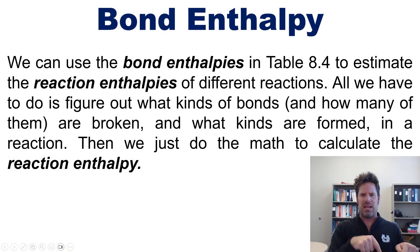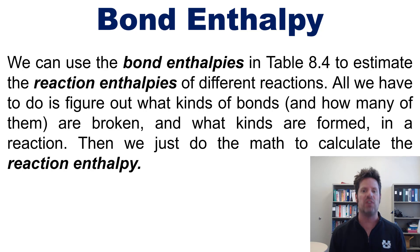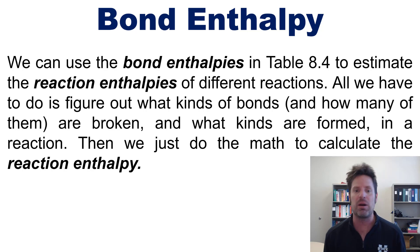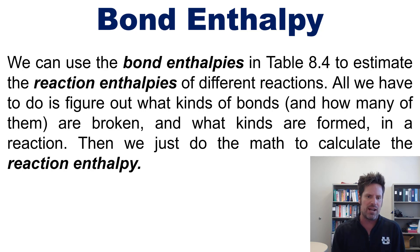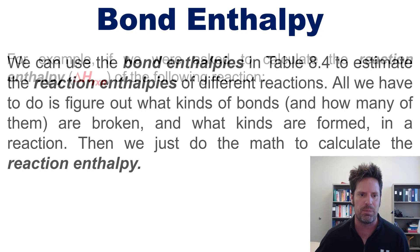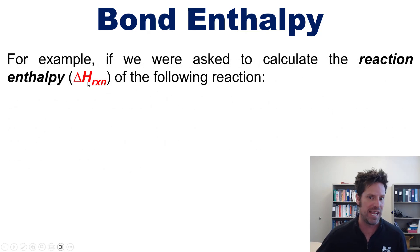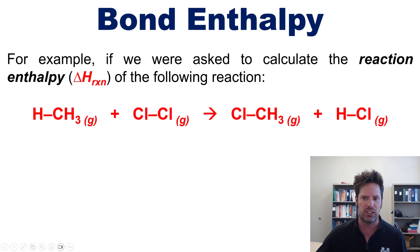We can use the bond enthalpies in that table to estimate the reaction enthalpies of different reactions. All we have to do is figure out what kinds of bonds and how many of them are broken, and what kinds of bonds are formed in a chemical reaction. Then we just do the math to calculate the reaction enthalpy. For example, if we were asked to calculate the reaction enthalpy, or delta H of reaction, of the following reaction using this bond enthalpy approach...